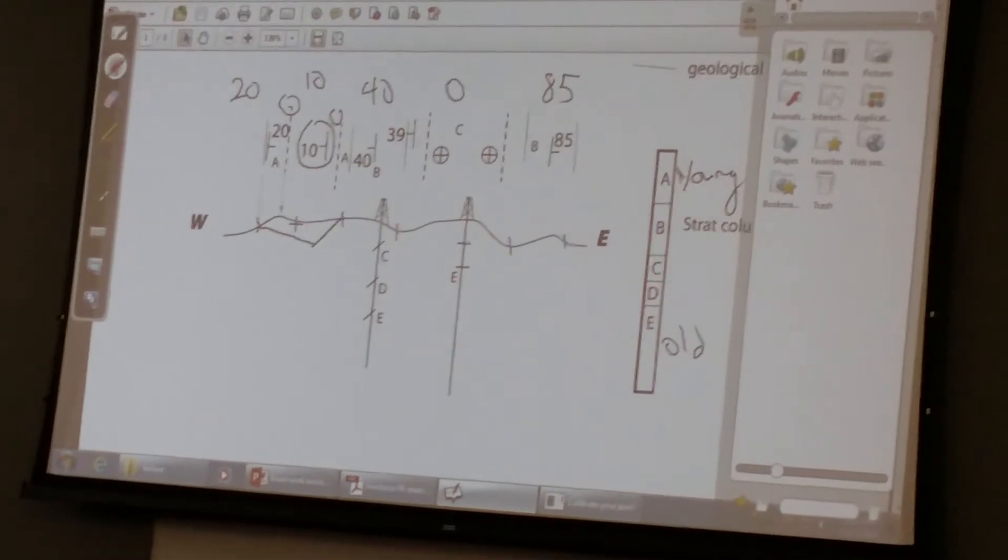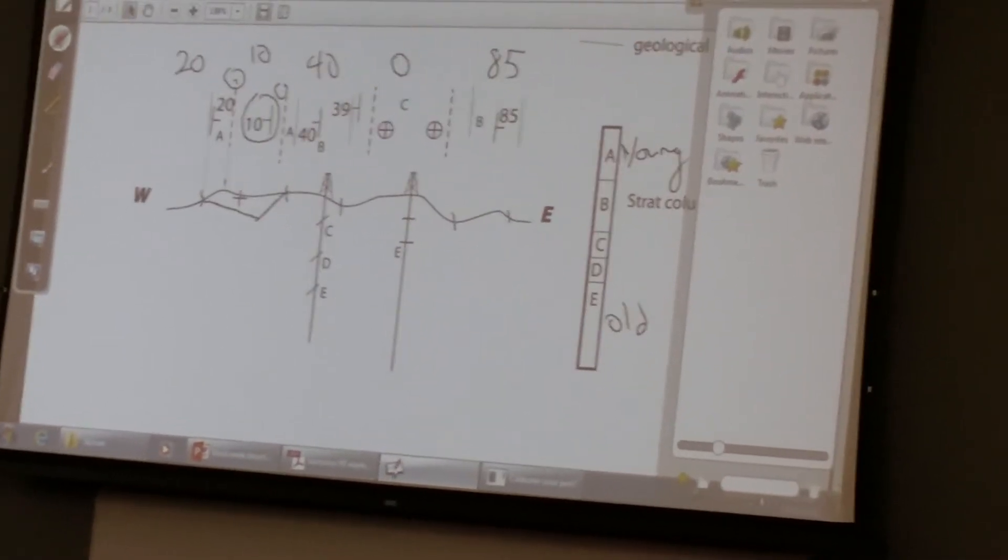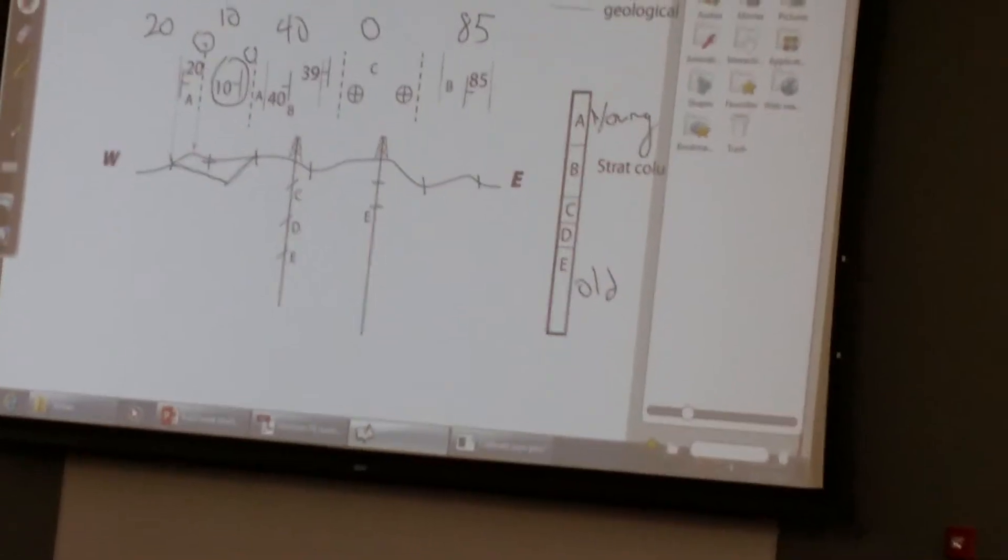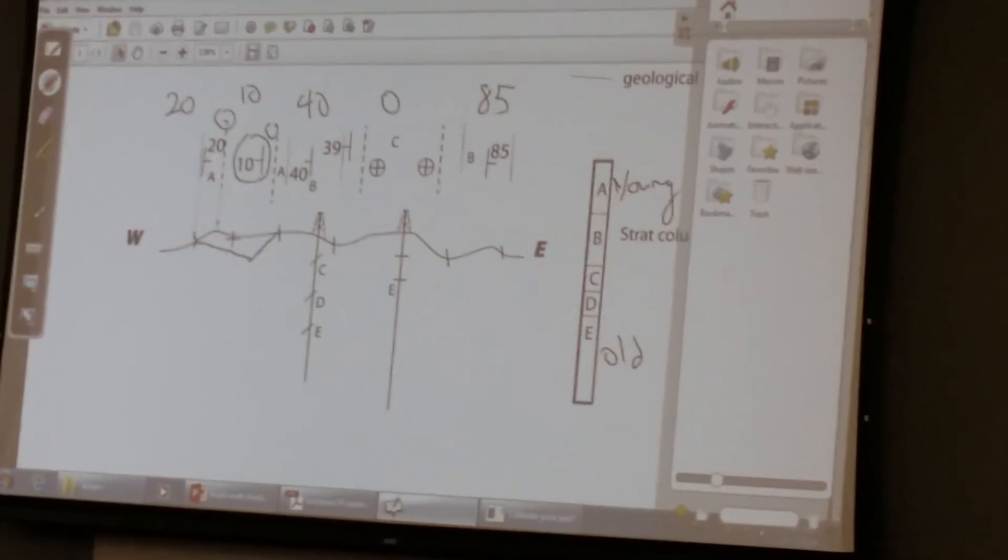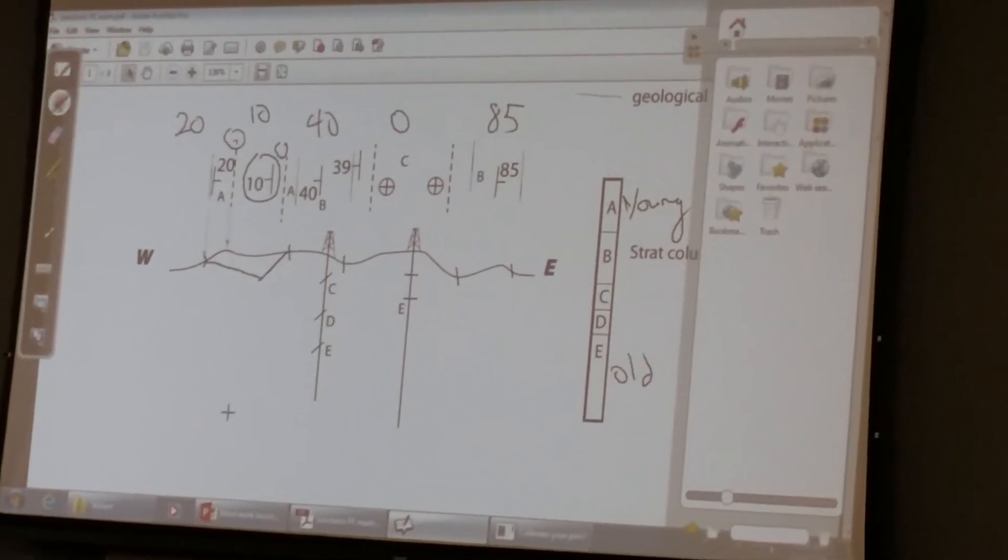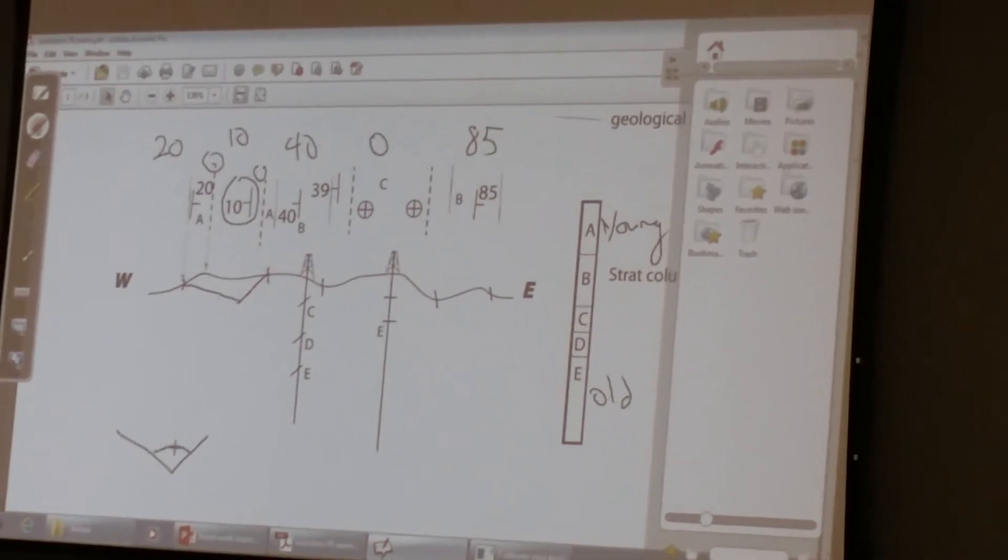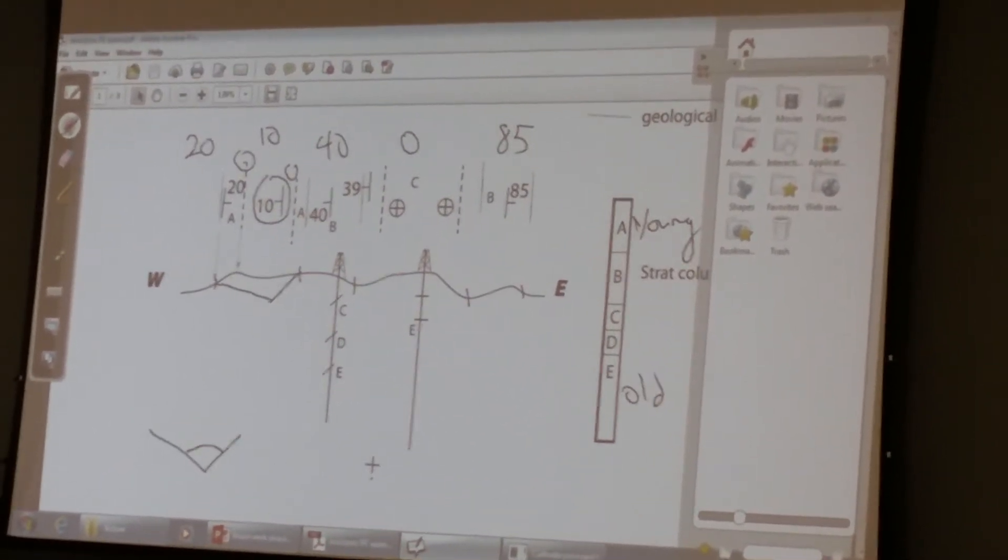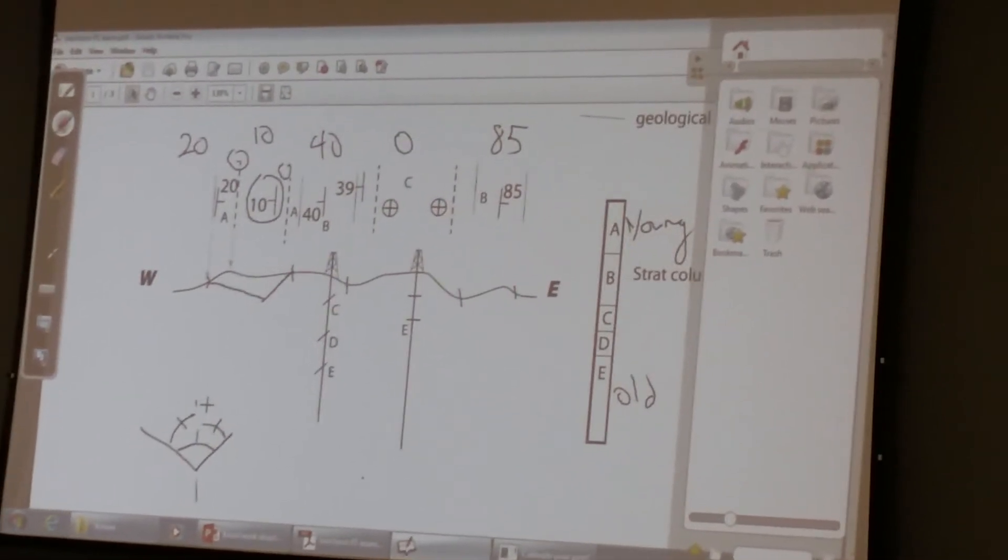And what do we know about kink bands and how they interact with the fold itself? What's the special relationship between the two? So there's a change in direction when the kink band is intersected. Well, there's something about the geometry of the kink band. It bisects. So what does that mean? It goes through. So if I have this 40 degrees, this 20 degrees, and I have a kink band, it needs to bisect that angle.